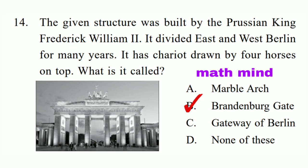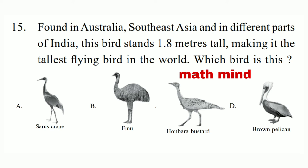Question No. 15. Found in Australia, Southeast Asia, and different parts of India, this bird stands 1.8 meters tall, making it the tallest flying bird in the world. Which bird is this? Option A is correct: Sarus Crane.